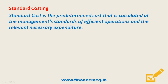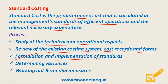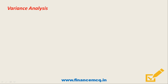Next we will see standard costing. Standard cost is a predetermined cost calculated at management's standards of efficient operations and relevant necessary expenditure. The process involves: first, studying technical and operational aspects; then reviewing the existing costing system, cost records and forms; then formulating and implementing standards; determining variances; and presenting information to the appropriate level of management to enable suitable remedial measures or revision of standards. Overall, standard costing involves using standard costs, comparing them with actual costs, measuring and analysing variances, and taking corrective action.